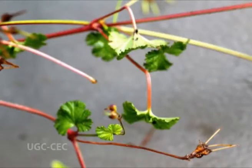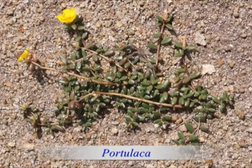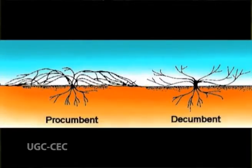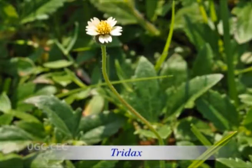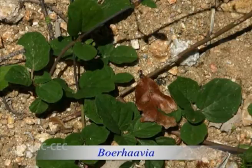Trailers are plants whose thin, long or short branches trail on the ground with or without rooting at the nodes. Trailers may be procumbent, decumbent, or diffuse. Procumbent plants lie prostrate on the ground — for example, Portulaca and Basella. Decumbent plants have branches that, after trailing for some distance, tend to rise at their apex — for example, Tridax. Diffuse plants are much branched with branches spreading out on the ground in all directions — for example, Boerhavia.